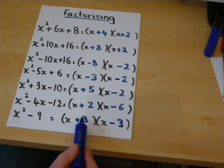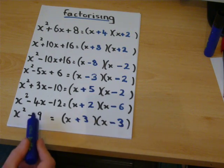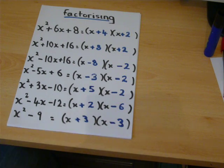And the x terms, three take away three, gives us no x's, they've cancelled out. And that, again, is called the difference of two squares.